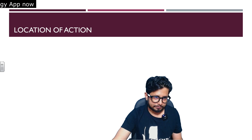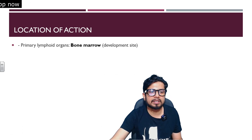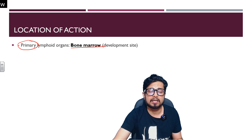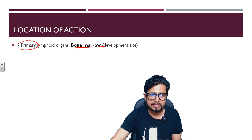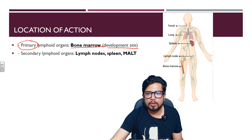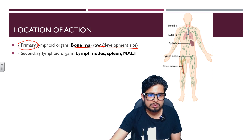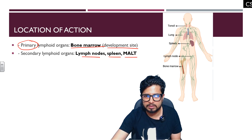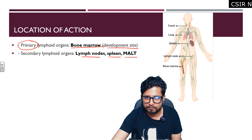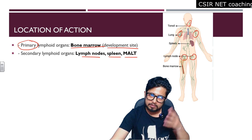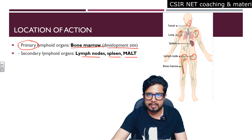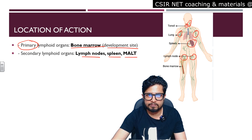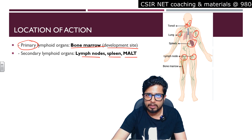Regarding the location of B cell activity: primary lymphoid organs like the bone marrow are where immune system cells originate and mature — bone marrow is where B cells develop. Secondary lymphoid organs are where B cells are distributed, including the lymph nodes, spleen, and tonsils. You can see the lymph nodes shown in green, positioned in areas like the armpits and thighs, with more lymph nodes near the tonsils.